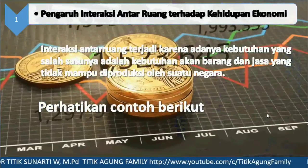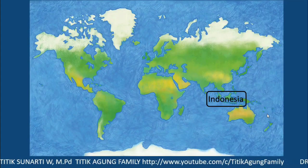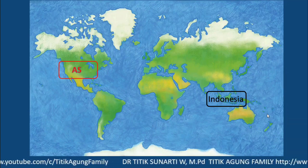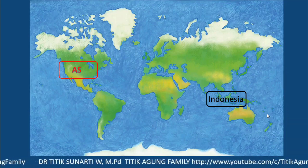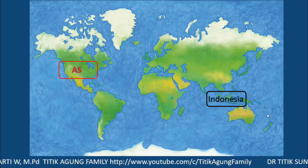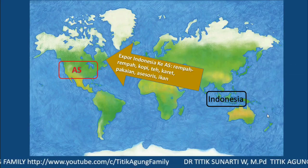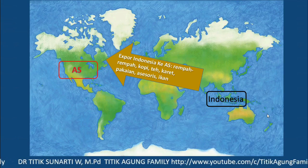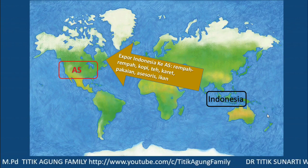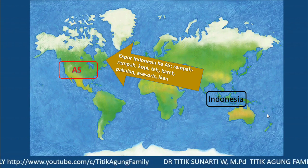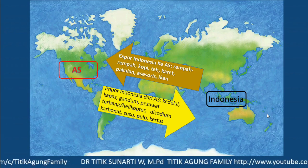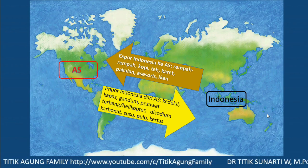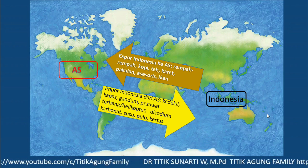Perhatikan contoh berikut ini. Ini adalah negara Indonesia dan negara Amerika Serikat. Kedua negara yang berbeda benua terjadi interaksi karena saling membutuhkan dalam kehidupan ekonomi. Sebagai contoh, Indonesia menghasilkan rempah-rempah, kopi, teh, karet, pakaian, aksesoris pakaian, dan ikan yang dikirimkan atau dijual kepada Amerika Serikat. Tapi Indonesia juga membeli barang dari Amerika Serikat berupa kedelai, kapas, gandum, pesawat terbang atau helikopter, disodium karbonat, susu, pulp, dan kertas yang tidak bisa dihasilkan oleh Indonesia.